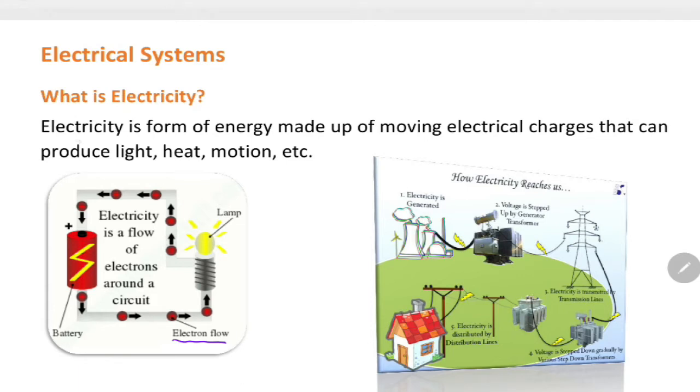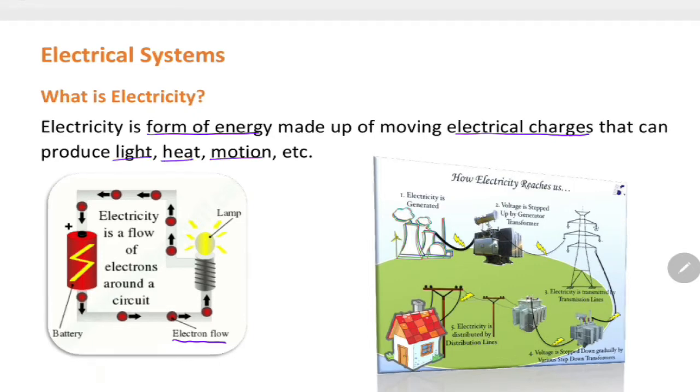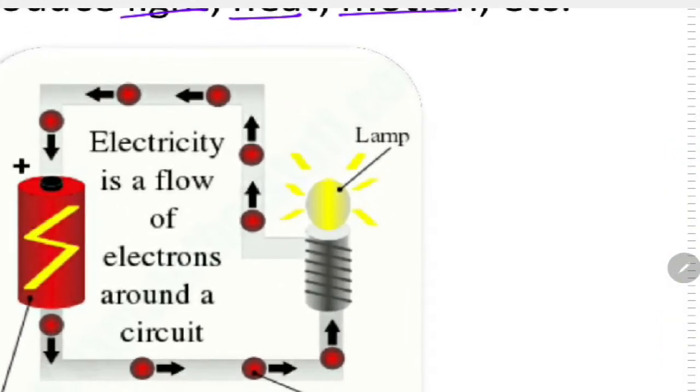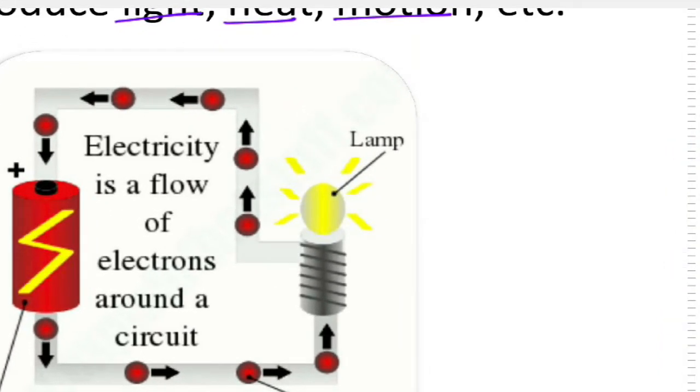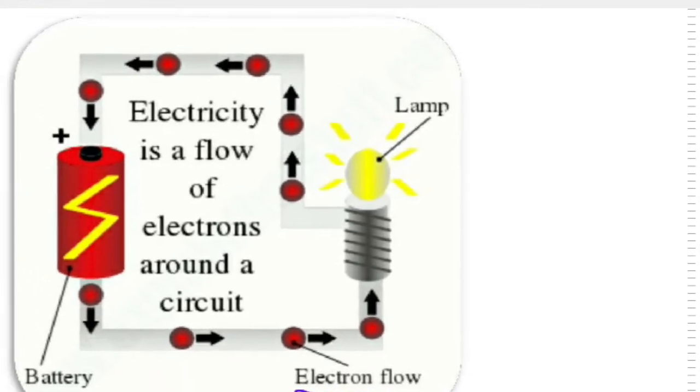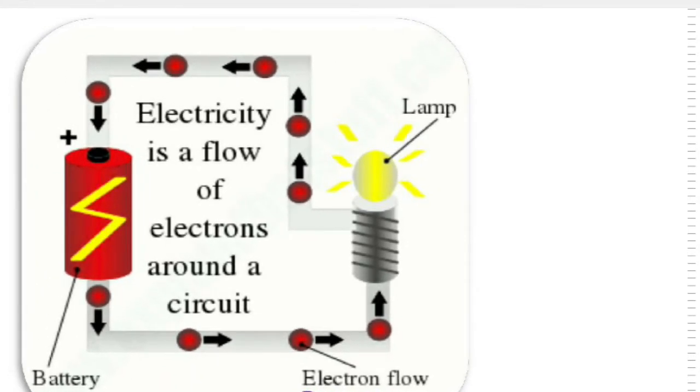Electricity is a form of energy made up of electrical charges that produce light, heat, motion, etc. If you look at this picture here, the red colored dots are electron flow, and the electron flow starts at the positive end at the battery.